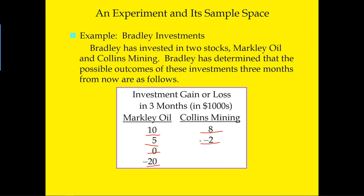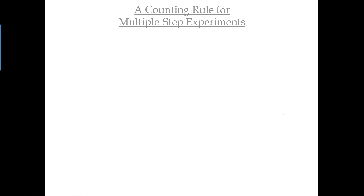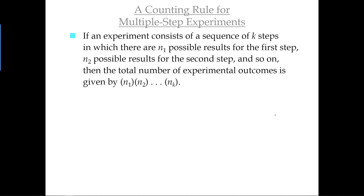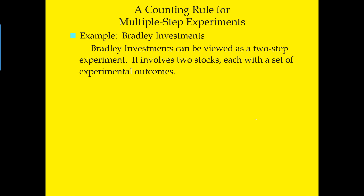You might ask: what if I hold three, four, or five stocks? Is there an easy way to find the possible outcomes? The answer is yes — that's called the multiple step counting rule. If an experiment consists of a sequence of k steps, with n1 possible results for the first step, n2 for the second, and so on, then the total number of experimental outcomes is n1 × n2 × ... × nk.